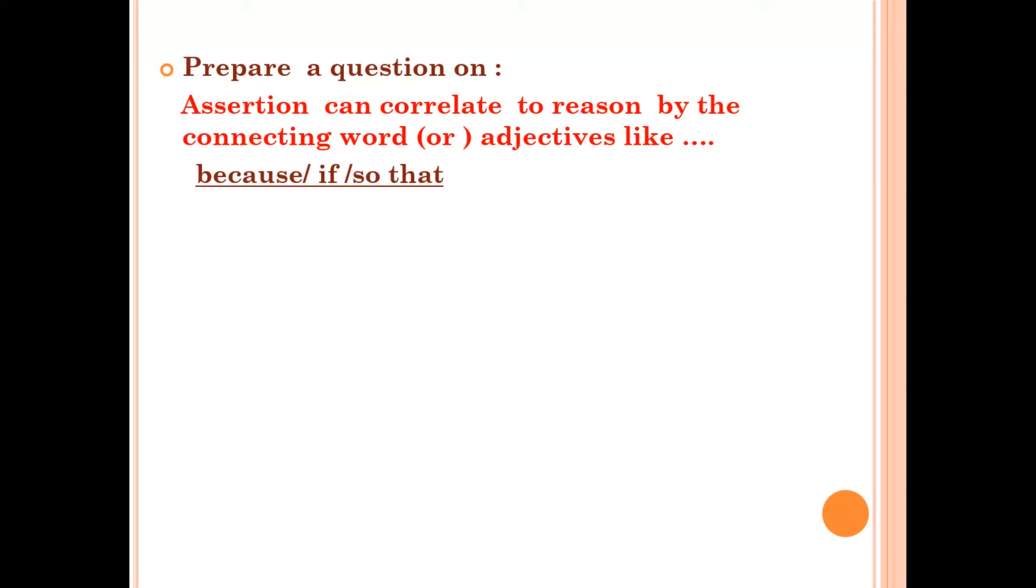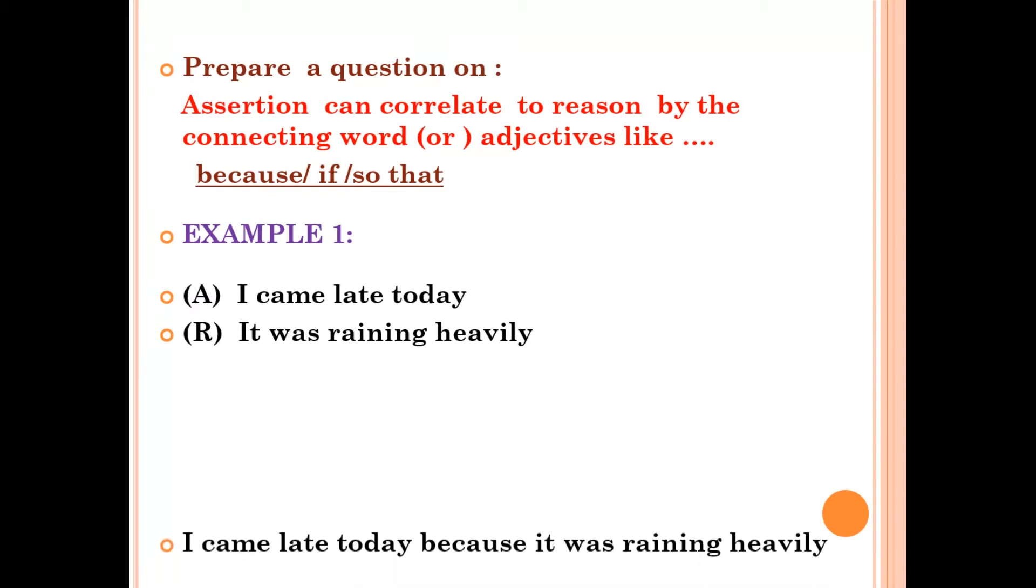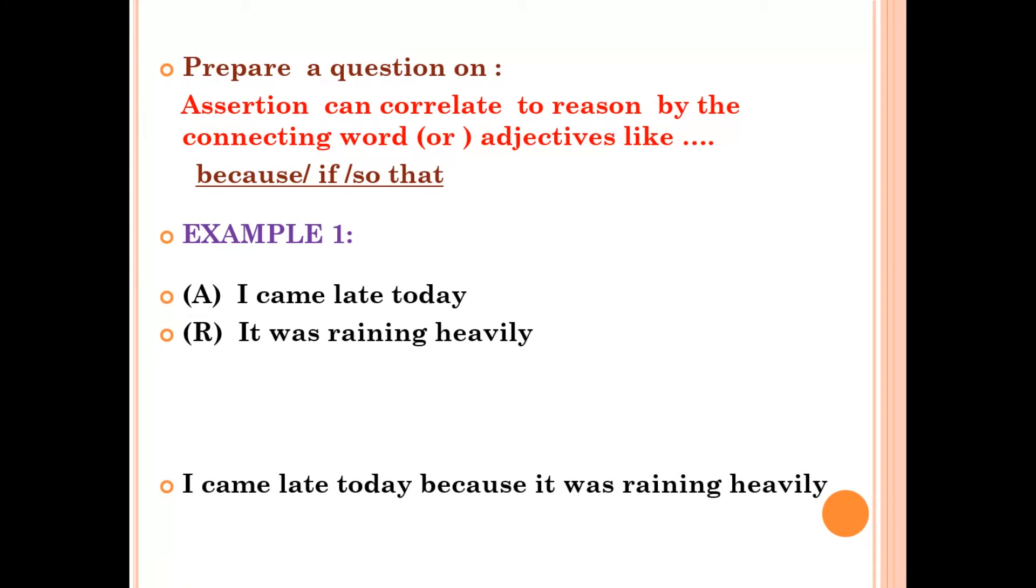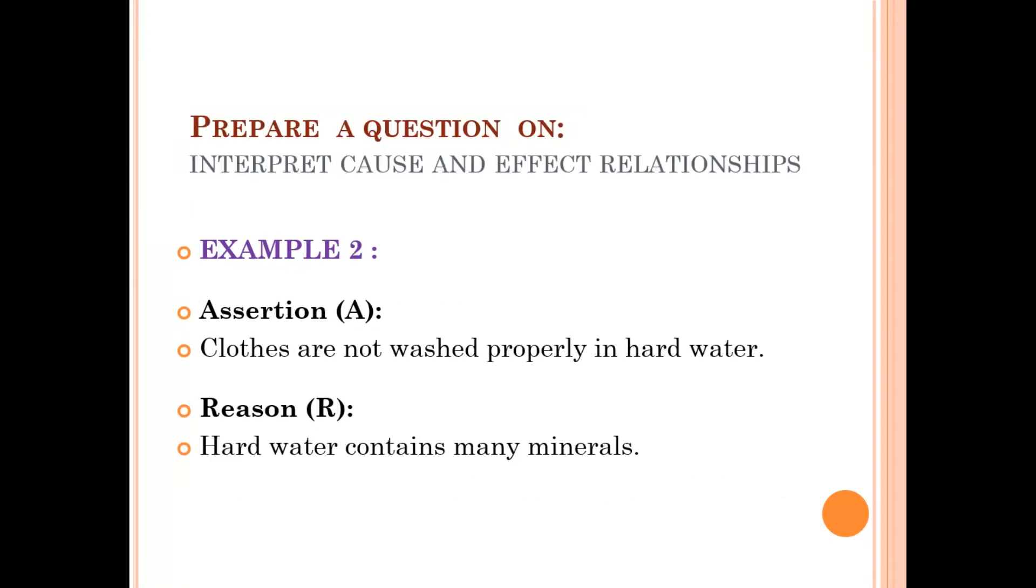Now we will go point wise. What type of assertion reason questions can we make? First, we should remember assertion can correlate to reason by the connecting word or adjectives like because, if, so that. For example, I came late today. This is the assertion. It was raining heavily. This is the reason given. So here the adjective is connecting the assertion and reason statements. We will check: I came late today because it was raining heavily.